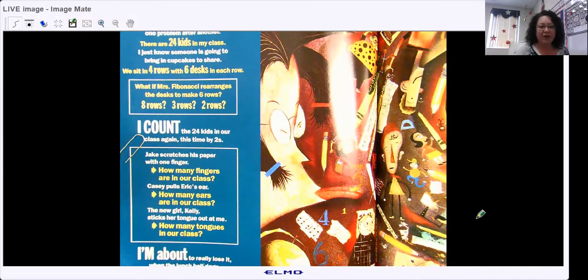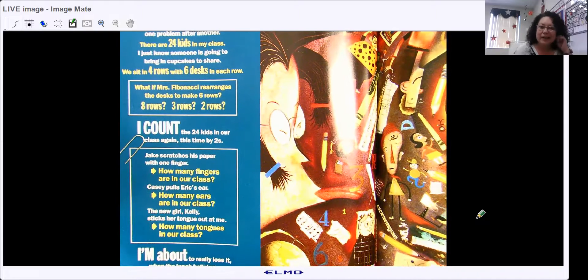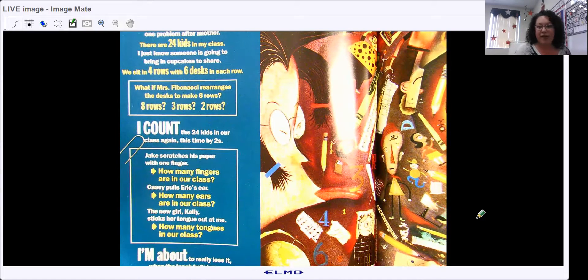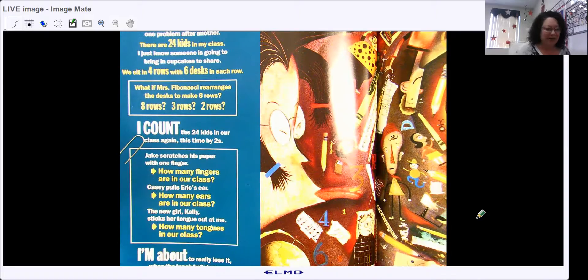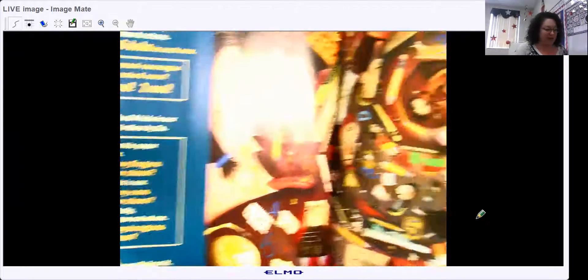Jake scratches his paper with one finger. How many fingers are in our class? Casey pulls Eric's ear. How many ears are in our class? The new girl, Kelly, sticks out her tongue at him. How many tongues in her class? I'm about to really lose it when the lunch bell rings.